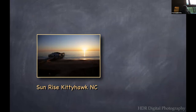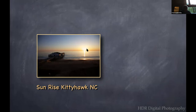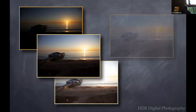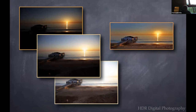Here's a sunrise at Kitty Hawk. You're overlooking the ocean and the sun's coming up — deep shadows, bright highlights. Take the extra photographs, combine them, and you end up with that. You open up the shadows and tame down the highlights, and with a little more work you can end up with that photograph.